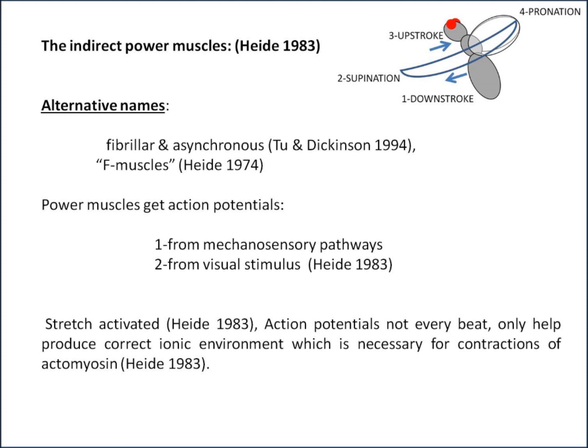You've got the dorsal longitudinal system, which runs from behind the head in the thorax towards the abdomen, and then the dorsal ventral, which runs from the back to the ventral side of the fly. The contractions are not triggered by neural commands, but rather they are triggered by mechanical oscillations.